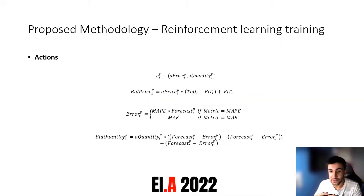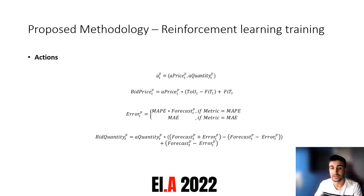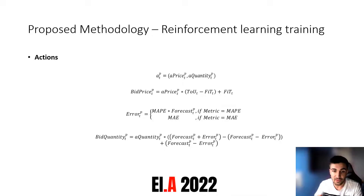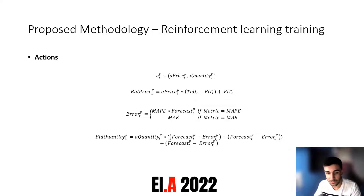Regarding the actions, we have two: one regarding the price and the other relative to the energy amount to transact. Both actions are in the range of zero to one, functioning as percentual values. For the price action, we frame the percentual value between the feed-in tariff and the time-of-use tariff, which are respectively the minimum and maximum price in the energy markets.